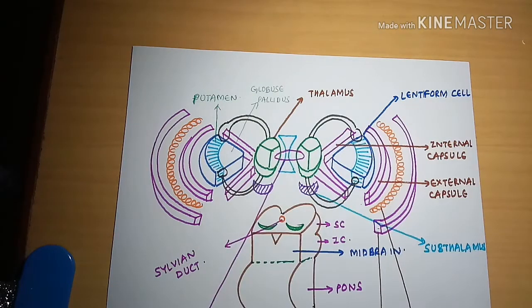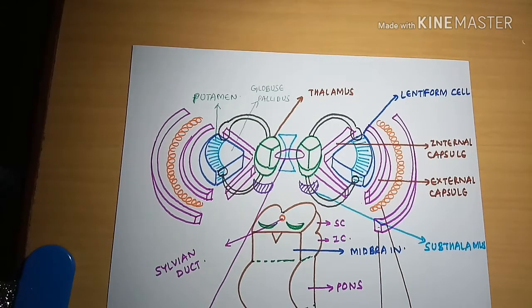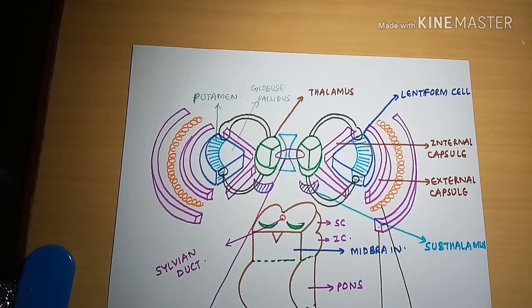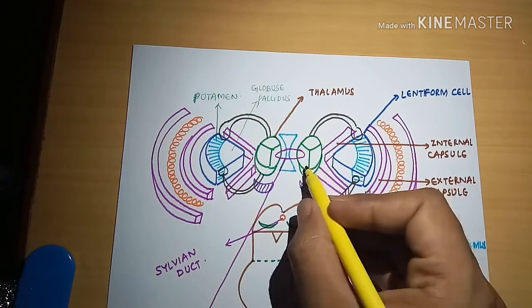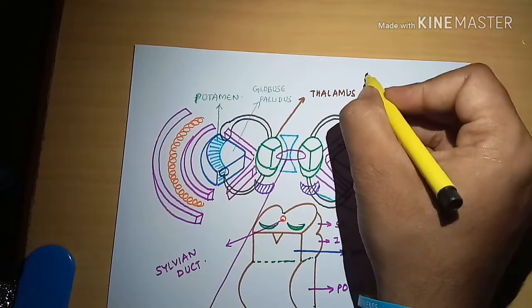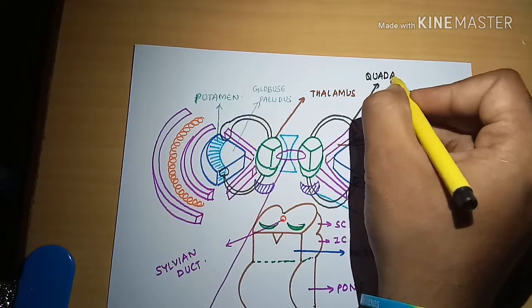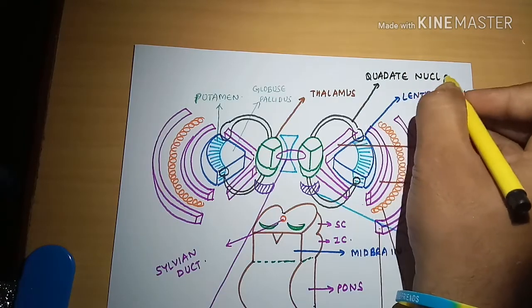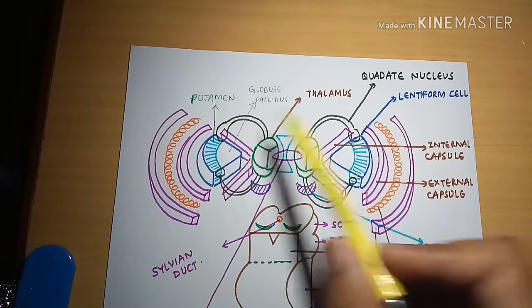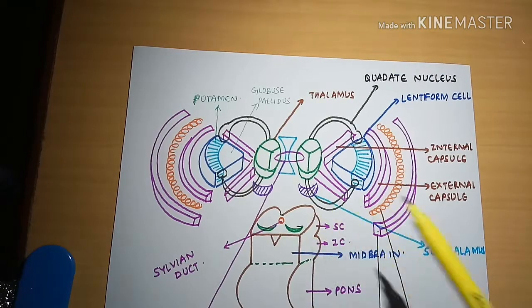This C-shaped nucleus is called the caudate nucleus. The caudate nucleus joins the thalamus and the lentiform nucleus together. This is the overall structure of the basal ganglia, which is present just above the midbrain.